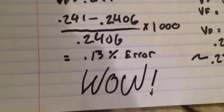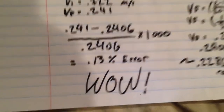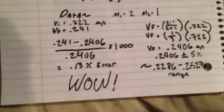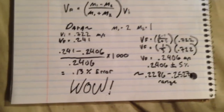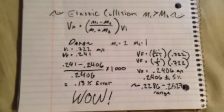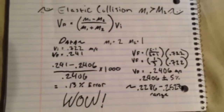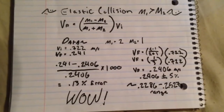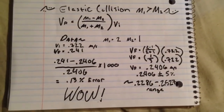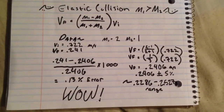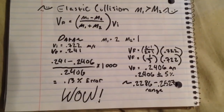So this proves that our equation where one mass was greater than the other is very, very close to being perfectly elastic.